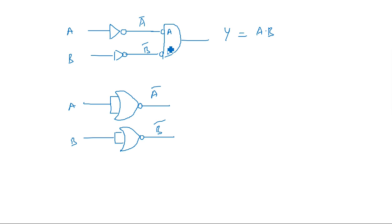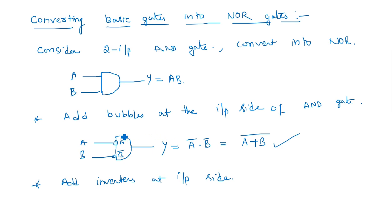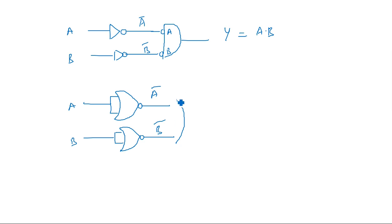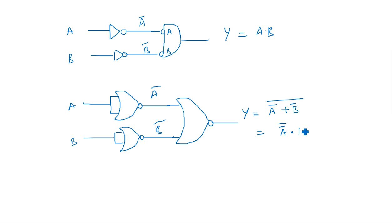The bubbled AND gate is nothing but a NOR gate — a bubbled AND gate gives NOR operation: (A + B)-bar. This is proven here: the bubbled AND gate can be replaced by a NOR gate because both perform the same operation. So Y = (A-bar + B-bar)-bar = A-bar-bar · B-bar-bar = A · B, which is the AND operation.